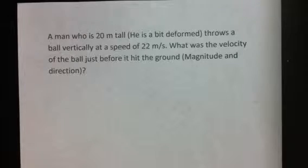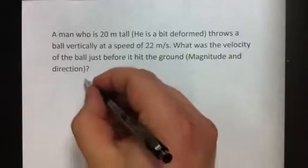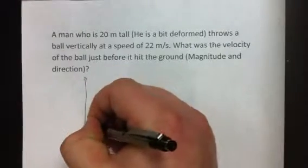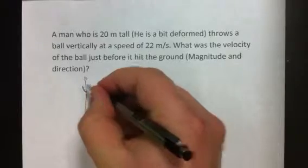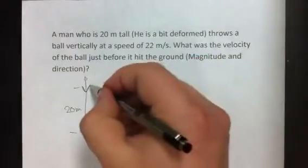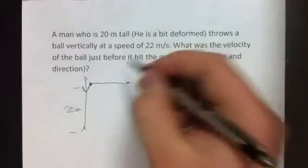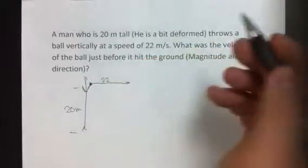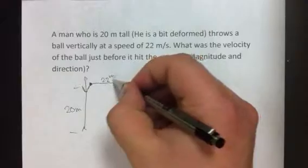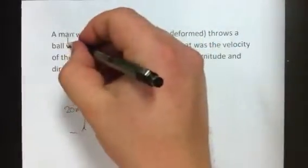What was the velocity of the ball just before it hit the ground? I want the magnitude and direction of the ball. Note: I said vertically in the problem, but I meant to say horizontally, so let's change that. Let's draw a picture to get an idea of what we're dealing with.